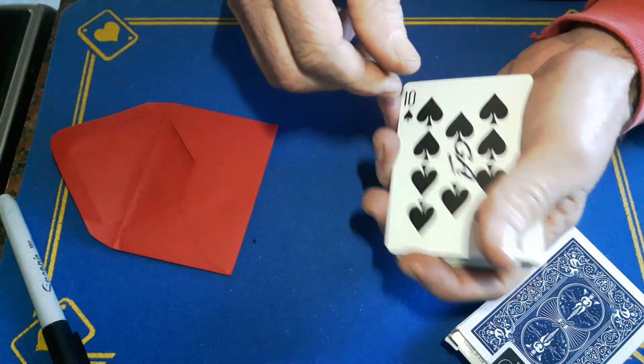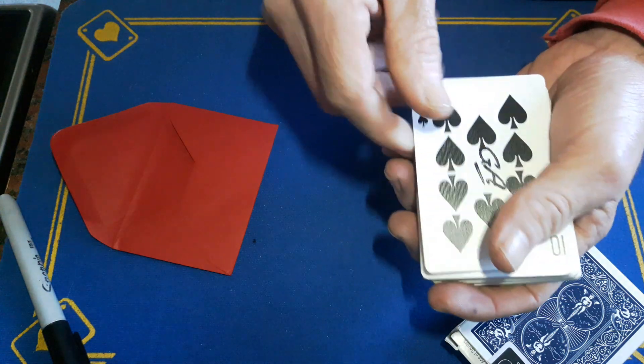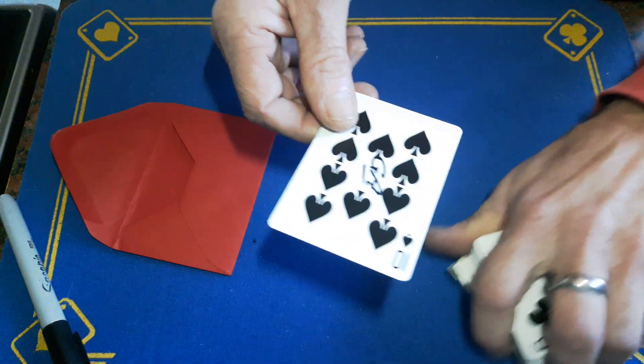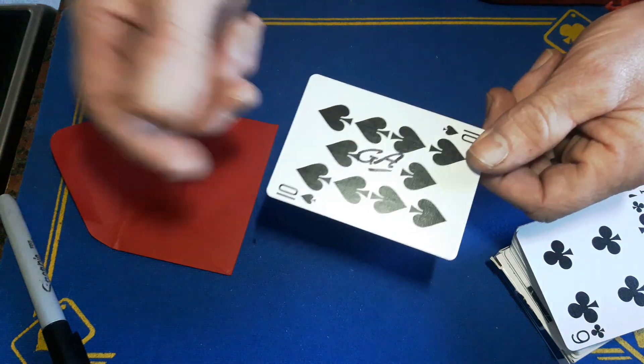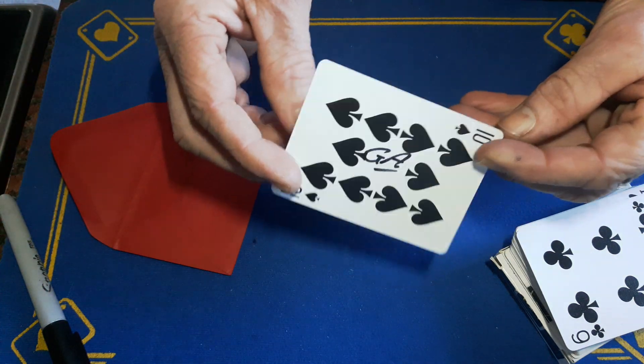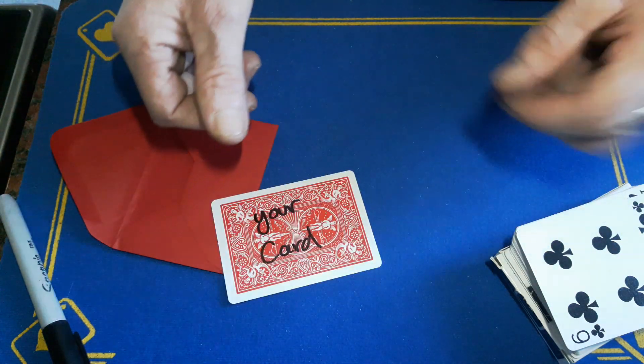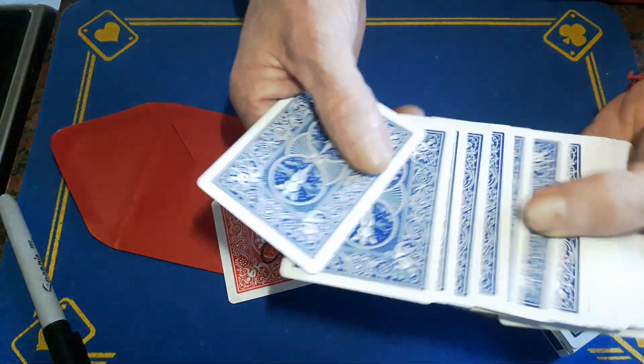Place it on top, do another triple lift, show them that is in fact their card. You're going to do a wrist kill while placing this on top of the box. Show them their impossible signed card, and it is their card because it says it on the back.